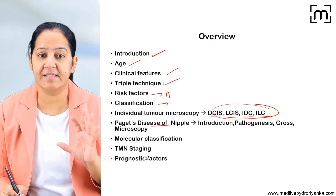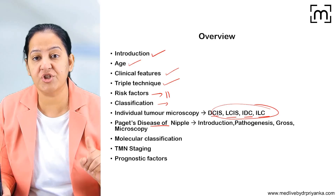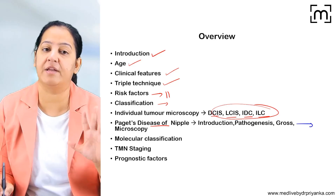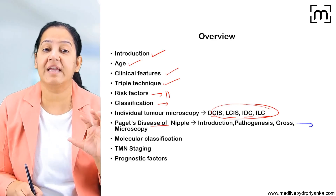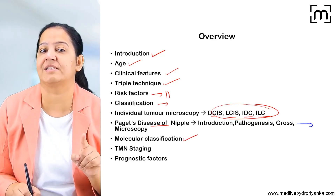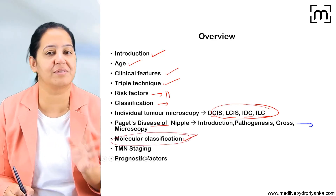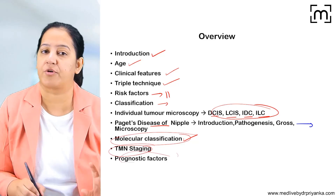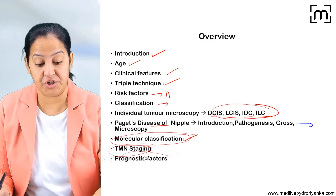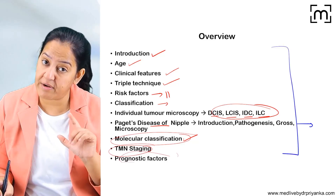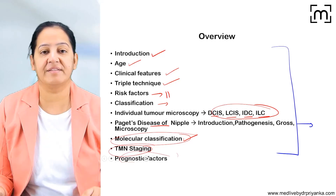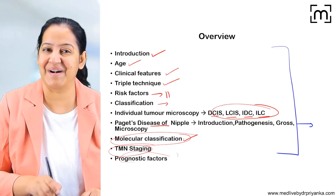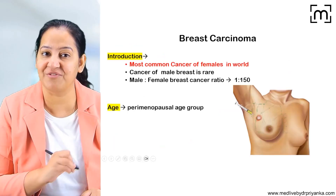We will see Paget's disease of the nipple in detail; sometimes you get a short question separately on Paget's disease of the nipple in your university exam. Then we will see the latest classification — the molecular classification — you can get a short note on this separately as well. Then we will see the TNM staging, and finally the prognostic factors. So it's a long question; if it is coming in your exam, you have to write down everything about that under these headings.